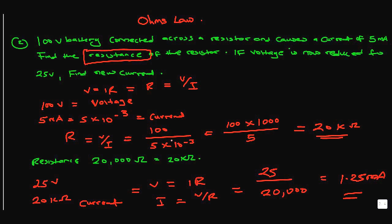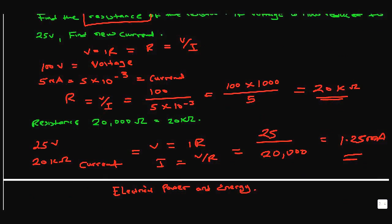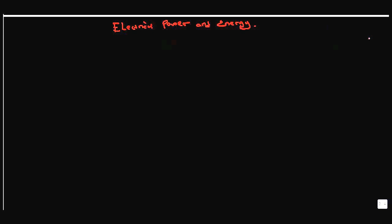Now let's move on to electrical power and electrical energy. Power is essentially the product of the potential difference and current. Power — symbol P — is equal to the voltage times current, and is measured in watts.